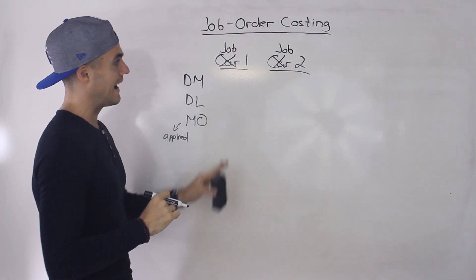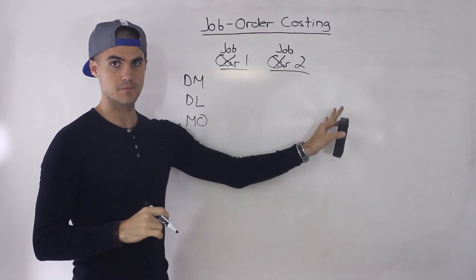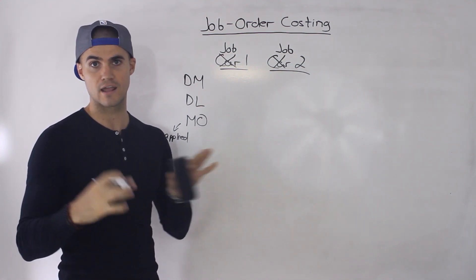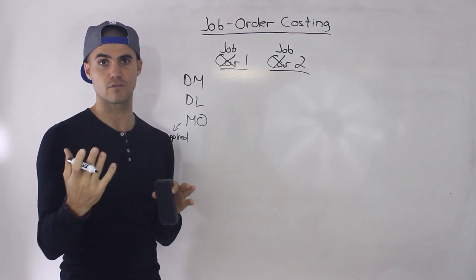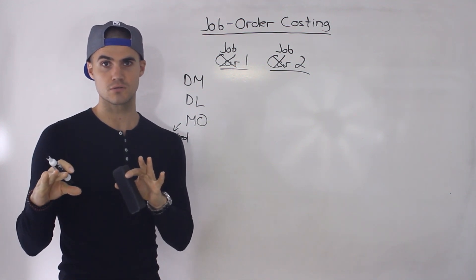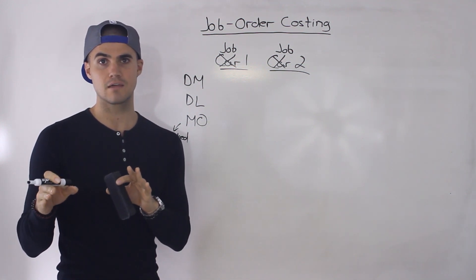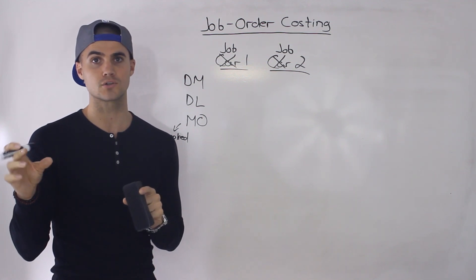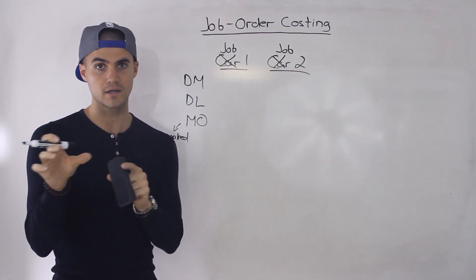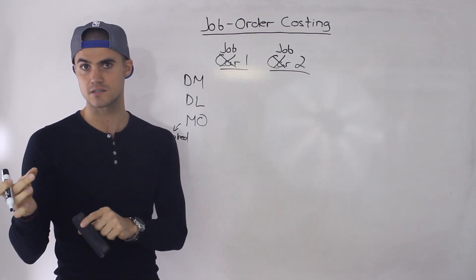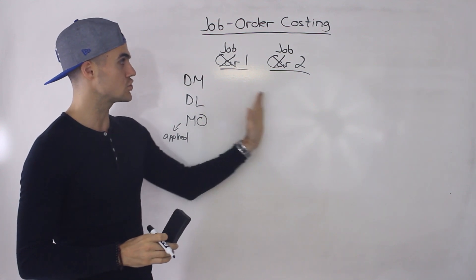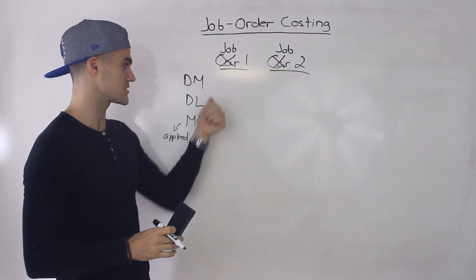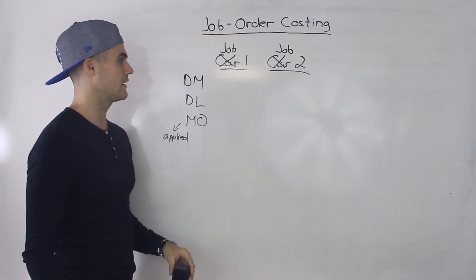The way I like to think about it: different jobs that are listed represent different clients that a firm may have. So let's say you have a firm manufacturing a certain product, and different clients are going to want different quantities of your product or different kinds of products. Each job is going to be unique in terms of its product costs.